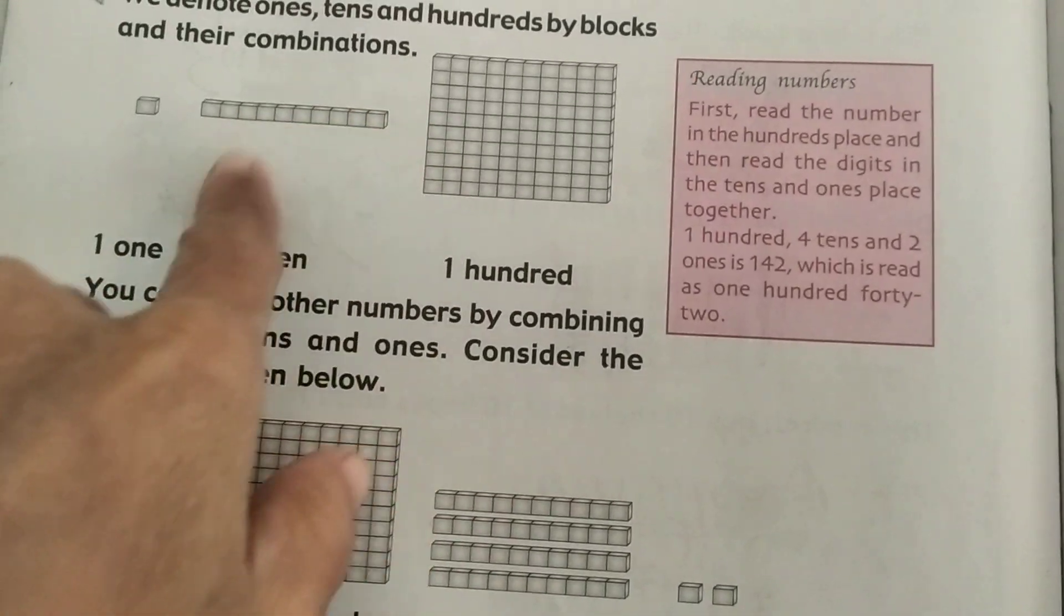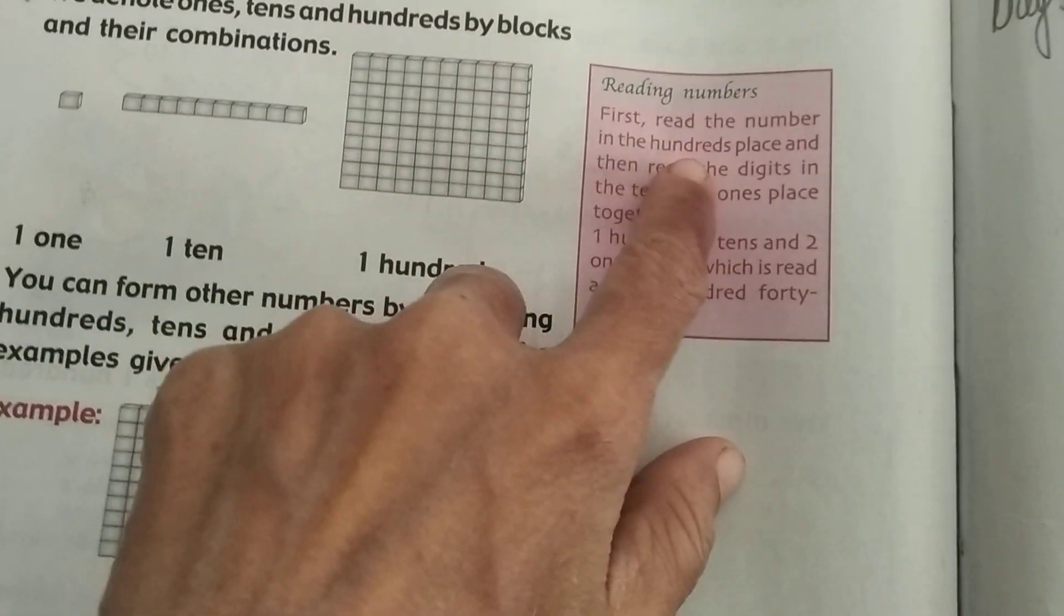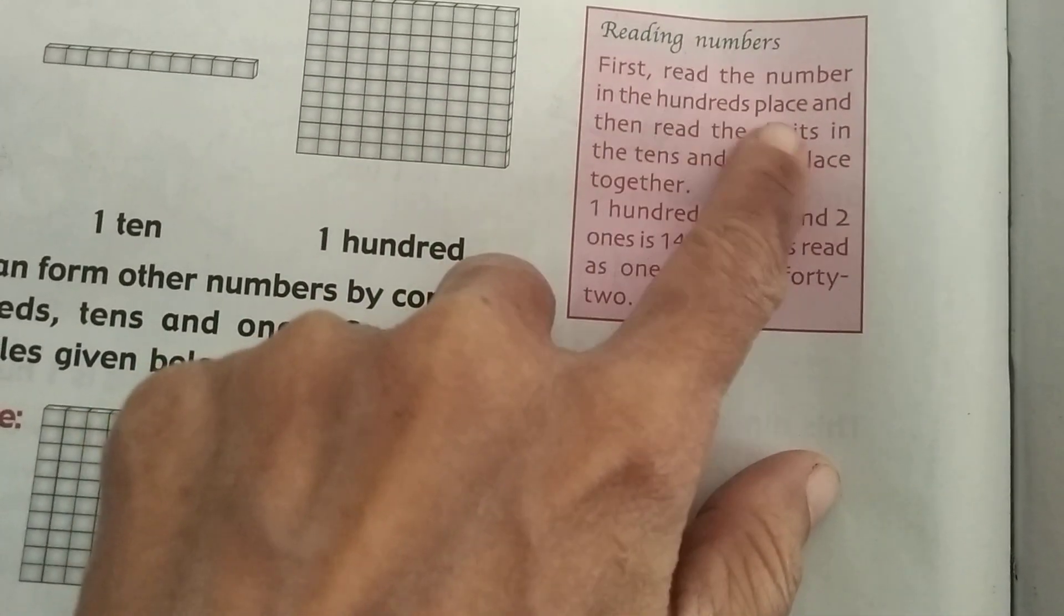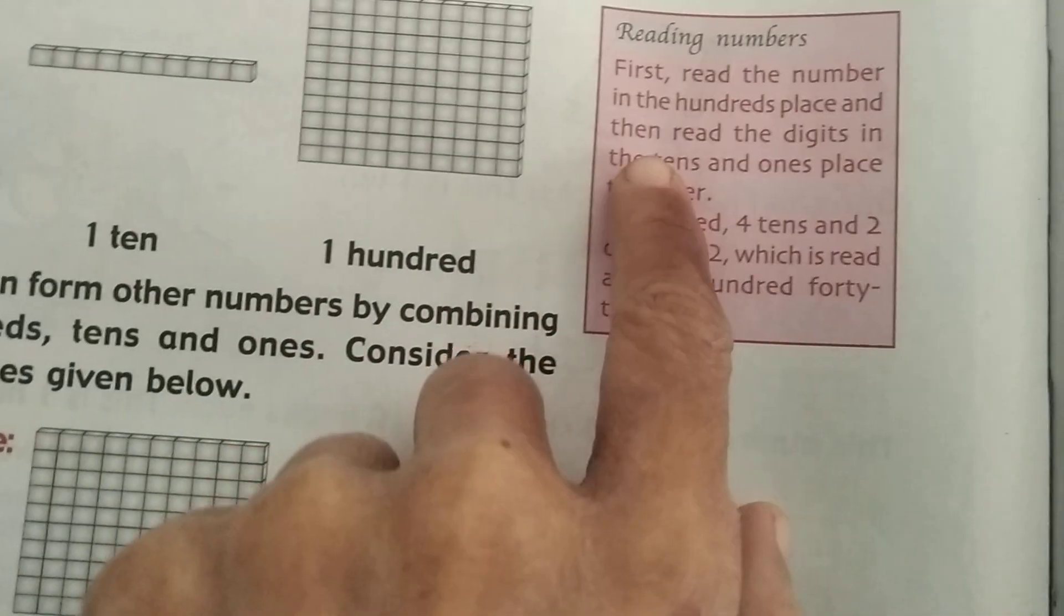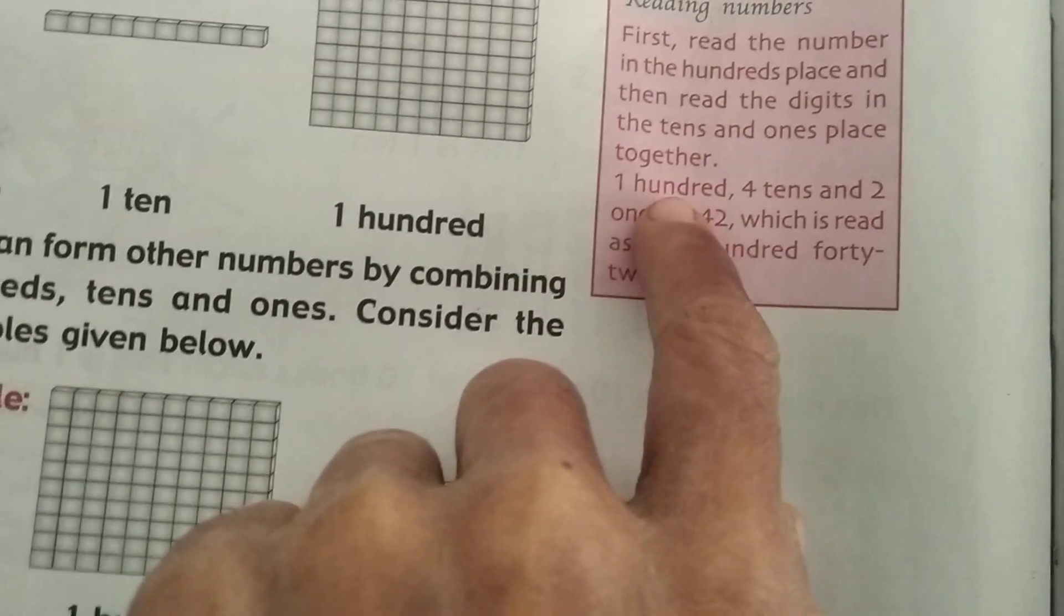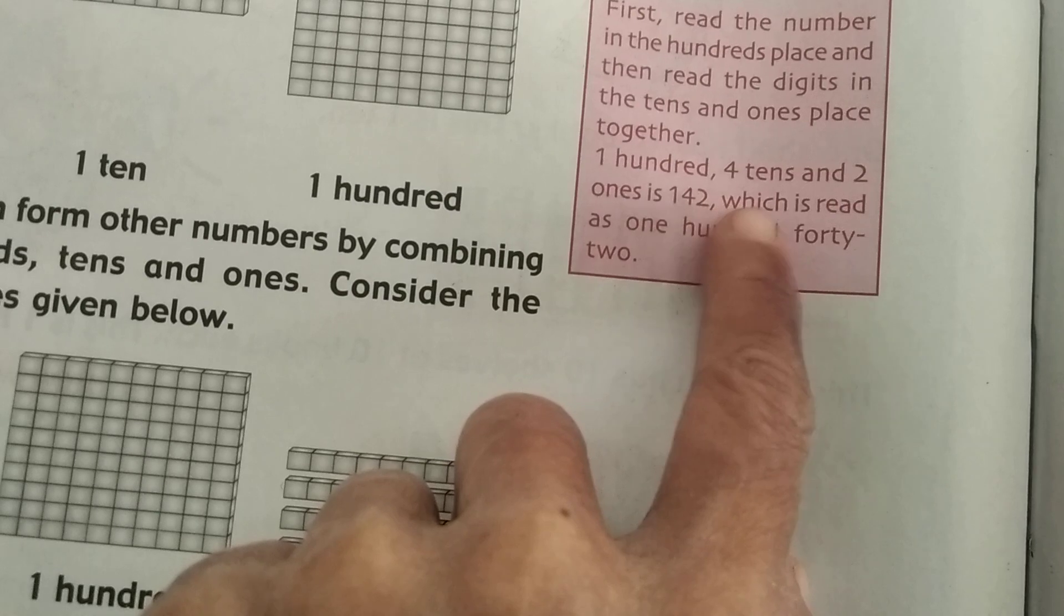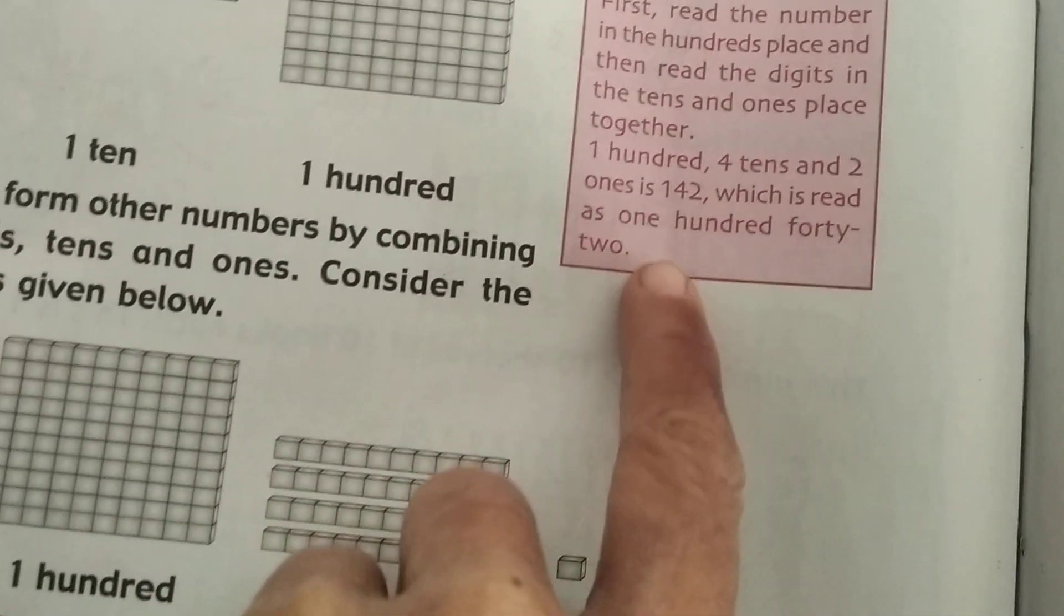This is 1, this is 10, this is 100. You have to read numbers by first reading the hundreds place, then the tens and ones place together. For example, 1 hundred, 4 tens, and 2 ones is 142, which is read as one hundred forty-two.